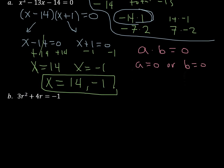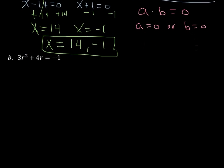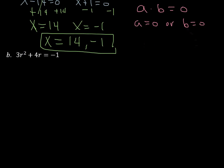Let's take a look at a little more difficult one down here. 3r squared plus 4r equals negative 1. So what we want to start by doing is we want to start by seeing is everything equal to 0 here? No, it's not. So we're going to start this problem by adding 1 to both sides.